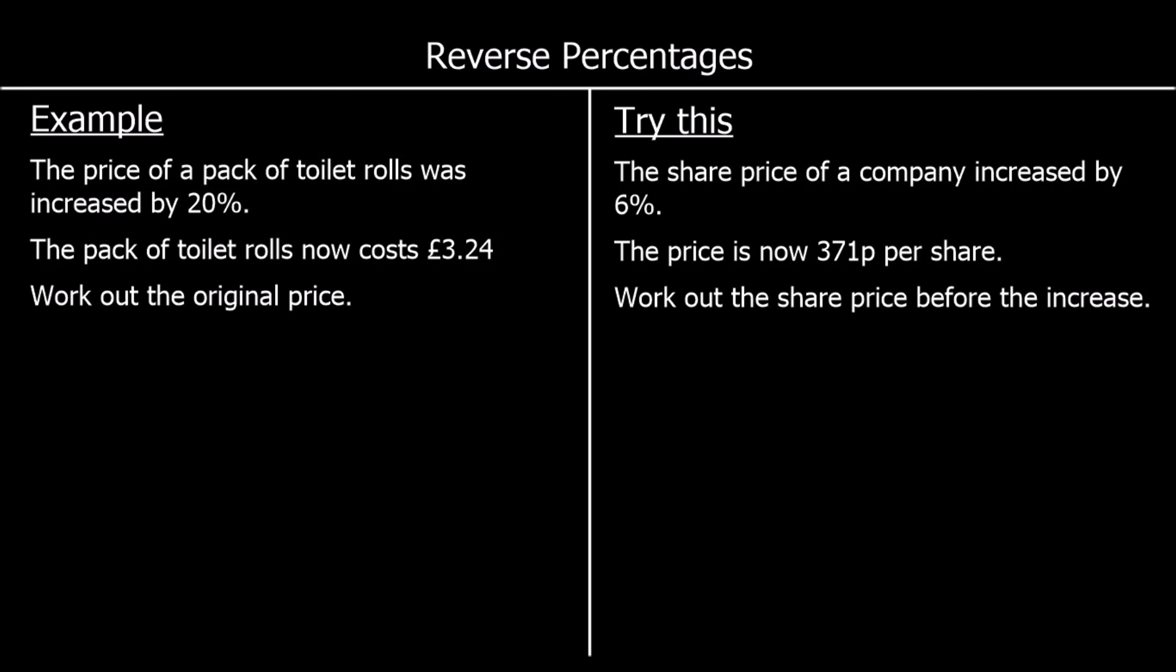I want to start by saying what we cannot do. We cannot say the price increased by 20%, so let's get £3.24, take 20% off of it and that will get us back to where we started. It won't and I'll show you why.